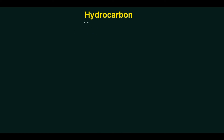The word hydrocarbon is basically made of two parts: the first word is 'hydro' and the second word is 'carbon'. Hydro means hydrogen, and carbon is carbon. So, the compound — the substance, the material — which is made of hydrogen and carbon. The definition will be: all compounds containing only hydrogen and carbon are called hydrocarbons.